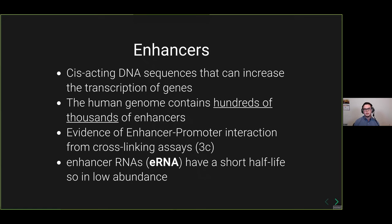Specifically what I'm interested in are enhancers. There's a lot of different things you can call with nascent transcripts such as miRNAs, long non-coding RNAs, and gene sequences. But specifically what you can pick up that you really can't pick up in RNA-seq is enhancers — cis-acting DNA sequences that can increase the transcription of genes. They act in tandem with promoters. There are hundreds of thousands of enhancers, and enhancer RNAs are produced at these enhancers with a very short half-life and low abundance, so we don't usually pick them up in general RNA-seq.